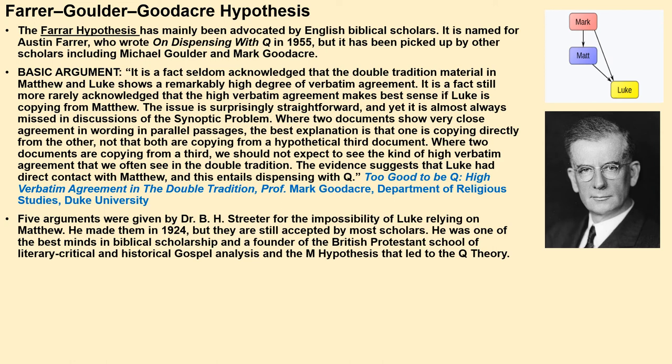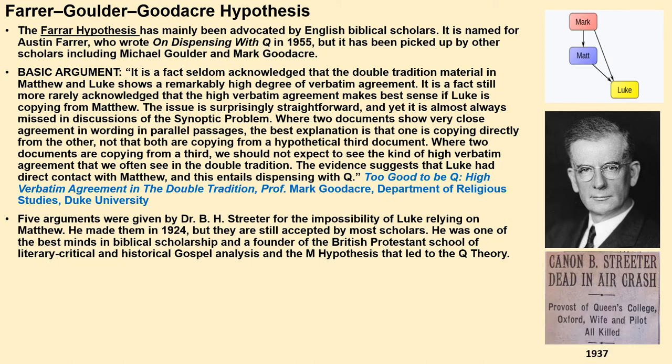Five arguments were given early in the 20th century by B.H. Streeter — in 1924 — for the impossibility of Luke relying on Matthew. They are still accepted by most scholars. Streeter was one of the best minds in biblical scholarship and a founder of the British Protestant school of literary critical and historical gospel analysis, including the M hypothesis that led to the Q theory. Unfortunately, he and his wife died in a disastrous plane accident in 1937, but he is still revered by many biblical scholars.